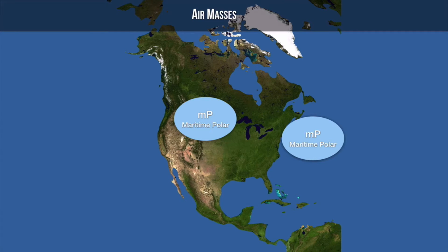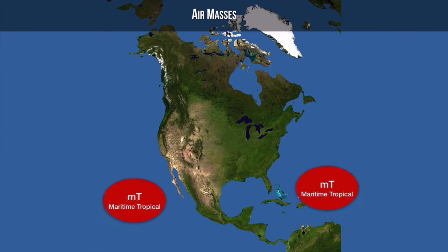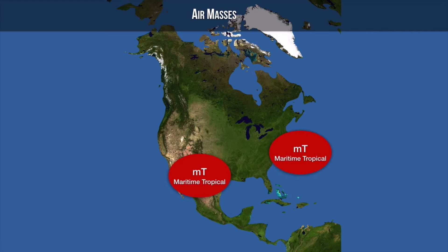The next air mass is maritime tropical. Maritime still means wet or moist air, but the tropical portion — think of the tropics — means warm. These are air masses that form over the ocean in tropical locations, so this is warm and moist air. These air masses follow a typical pattern, affected by the jet stream being pushed west to east and also pushed up to the northeast.